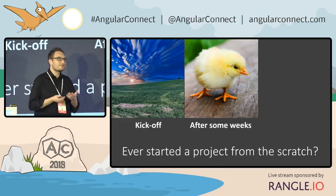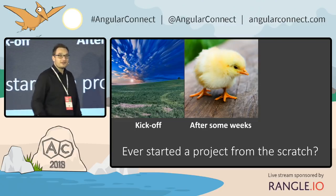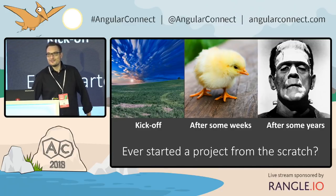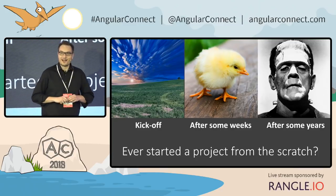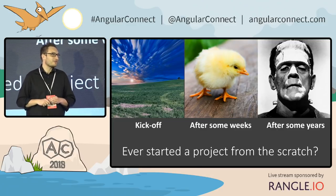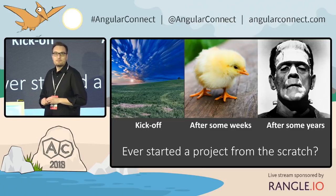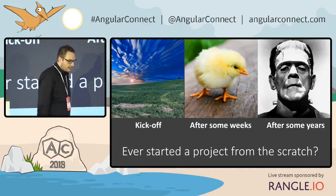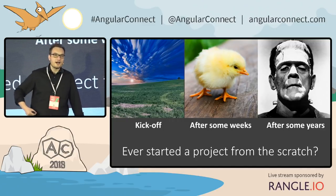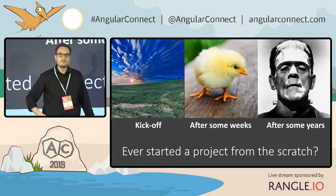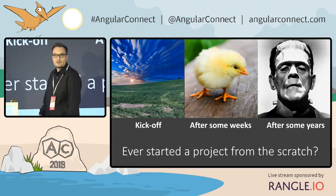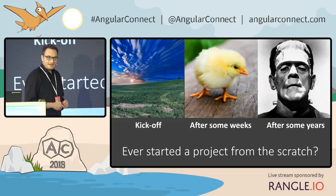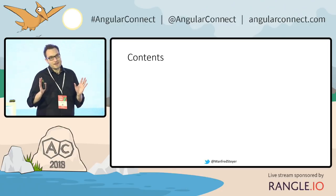But after some years, it looks exactly like the Frankenstein monster — this monster that was assembled of different body parts of different people. This is exactly what happens when we don't care about architecture. We are adding one body part after the other, one use case after the other, several libraries and perhaps frameworks. And maintaining such a system is really difficult.